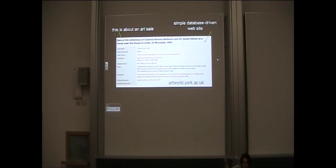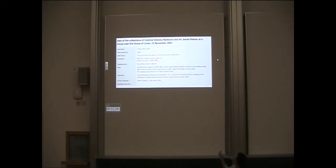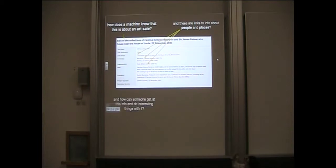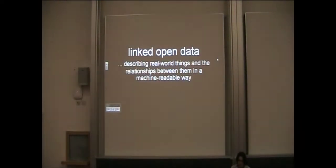But what it doesn't do is allow machines to find stuff out. So this is the limitation that we're trying to deal with with linked data. How does a machine know that this is an art sale? How does it know that these are places and people? How do we make this kind of information that a person can read very easily much more readily available to machines? And then from there, how do we let people do interesting things with it? Well, linked open data is certainly one of the potential answers.